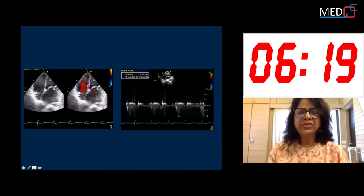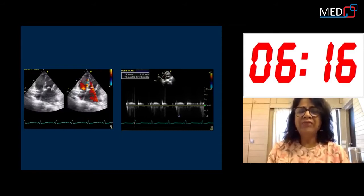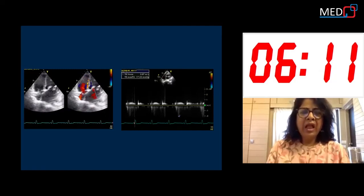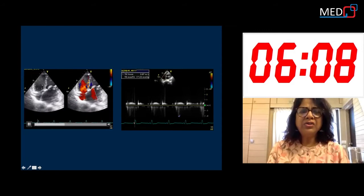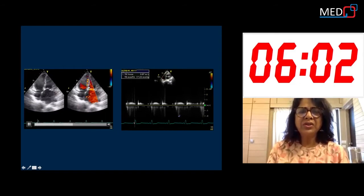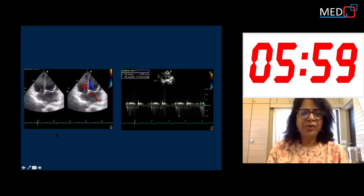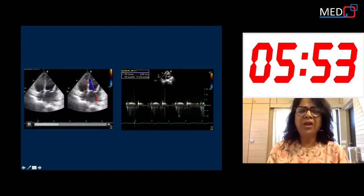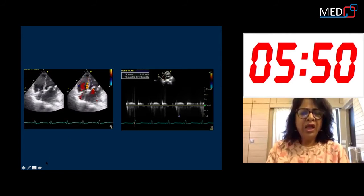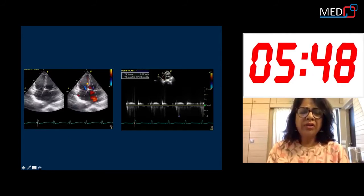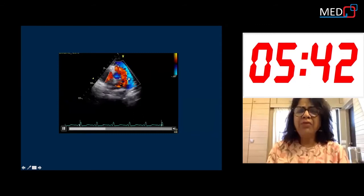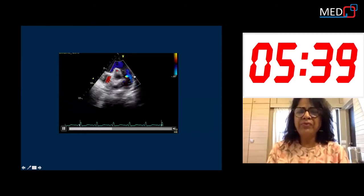Till now, this was a case of rheumatic mitral stenosis with a valve area of 1.2 and no pulmonary hypertension. But as I started looking at the TR, I got some abnormal flows in the interventricular septum, suggestive of myocardial collateral flow. And again, when I looked at the color flow across the RV outflow tract, I could see an abnormal flow in the main pulmonary artery before its bifurcation.